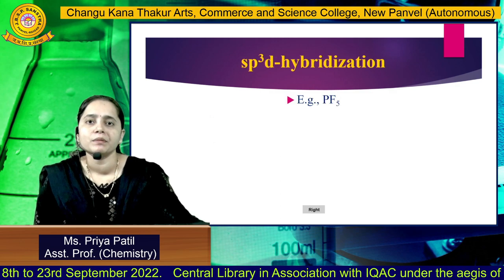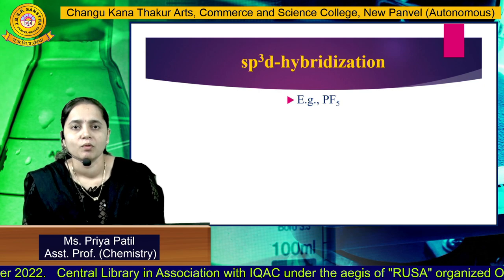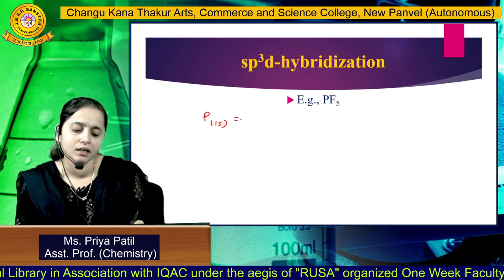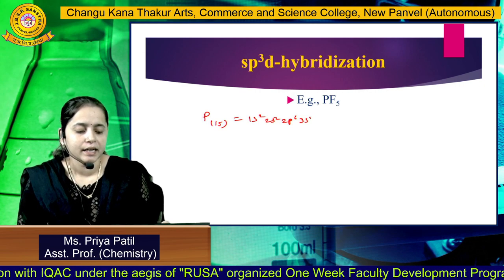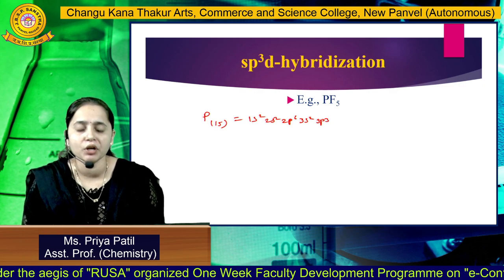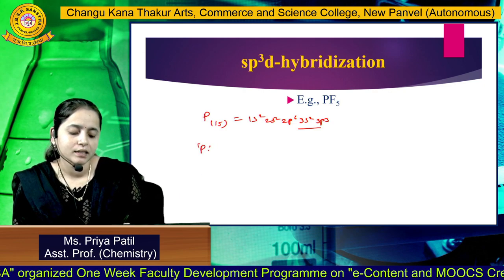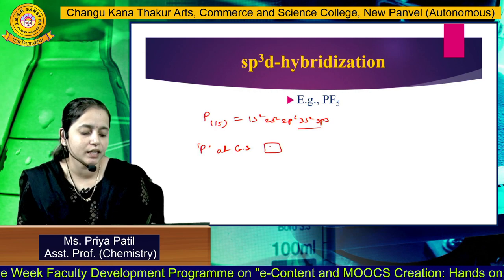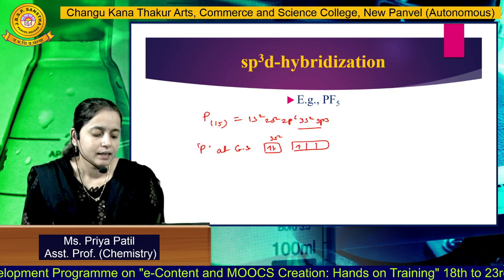The next type of hybridization is SP3D, and the example is PF5. The central atom is phosphorus, having atomic number 15, with electronic configuration 1S2, 2S2, 2P6, 3S2, and 3P3. The outermost electronic configuration is 3S2, 3P3. We will take phosphorus at ground state having valence electronic configuration 3S2 and 3P3.